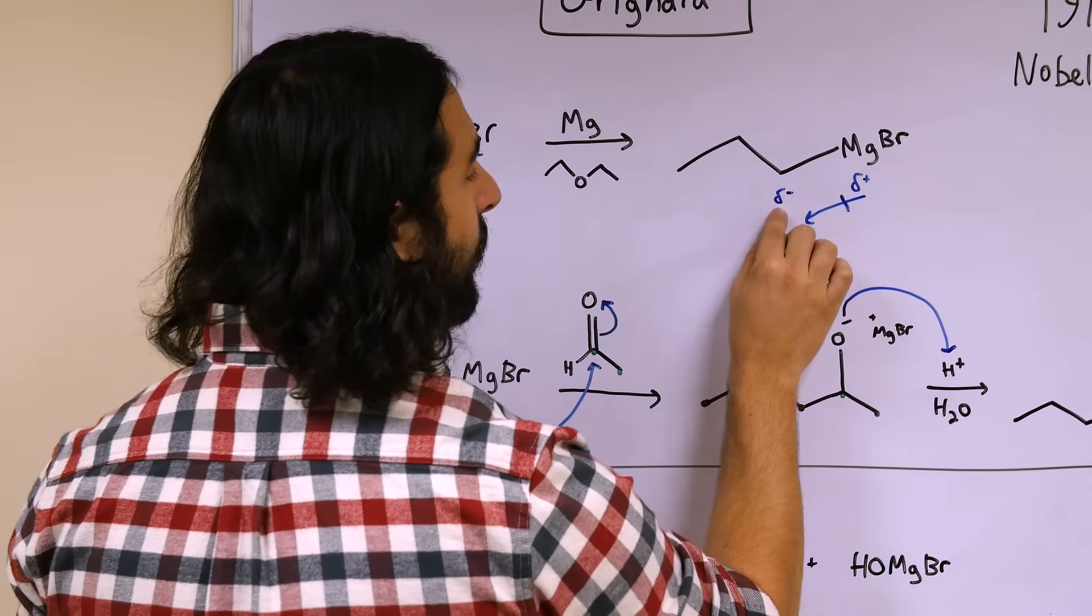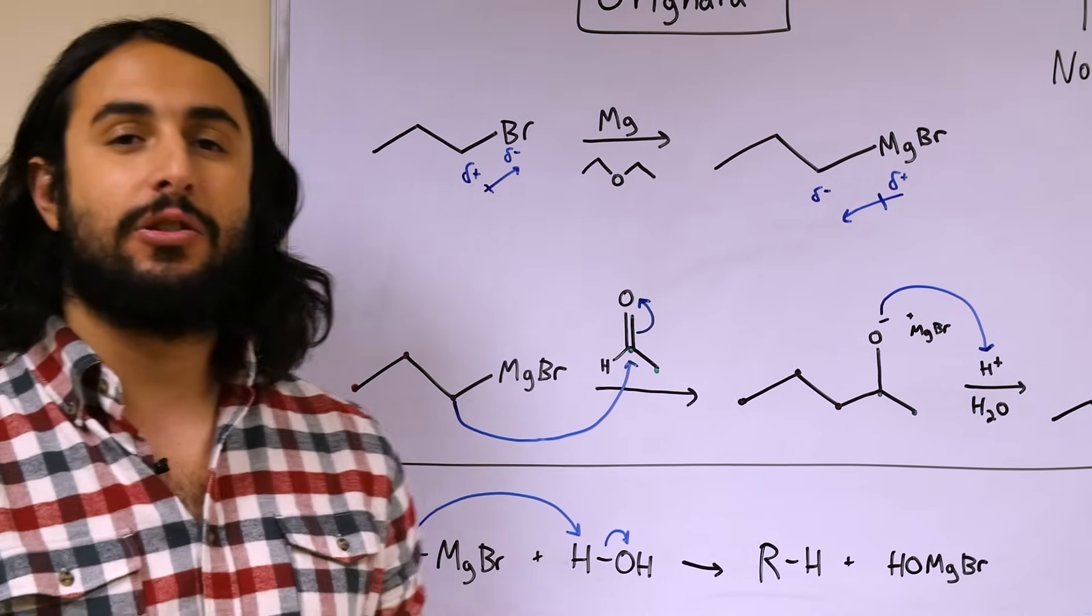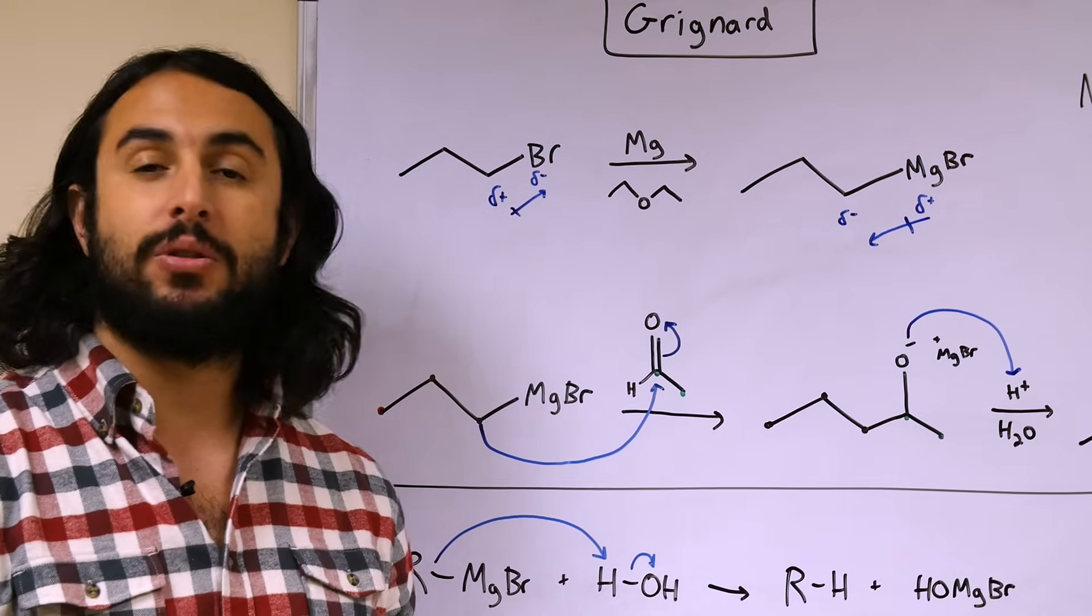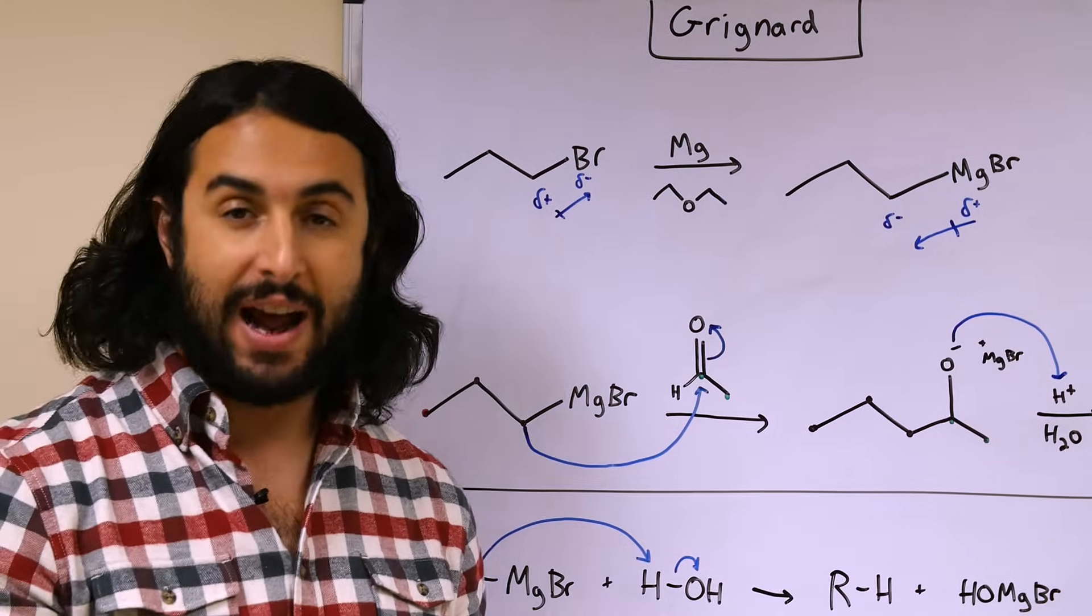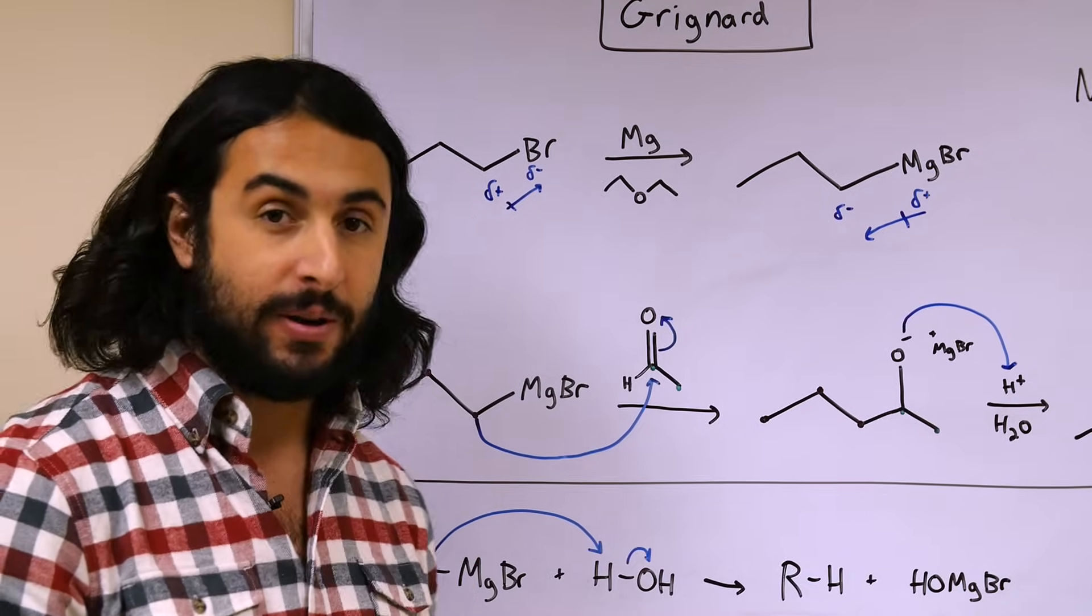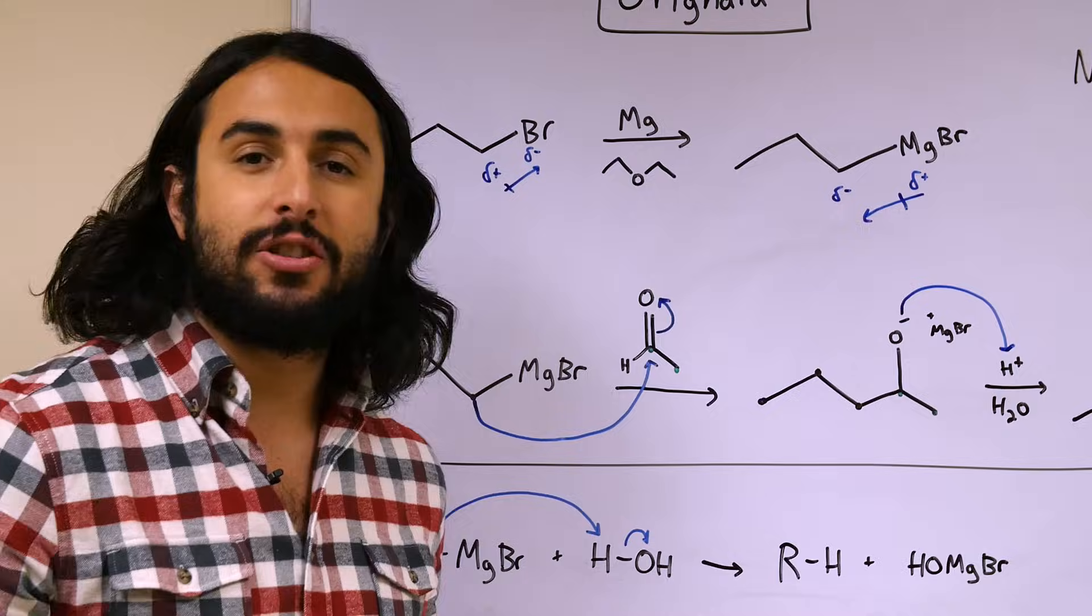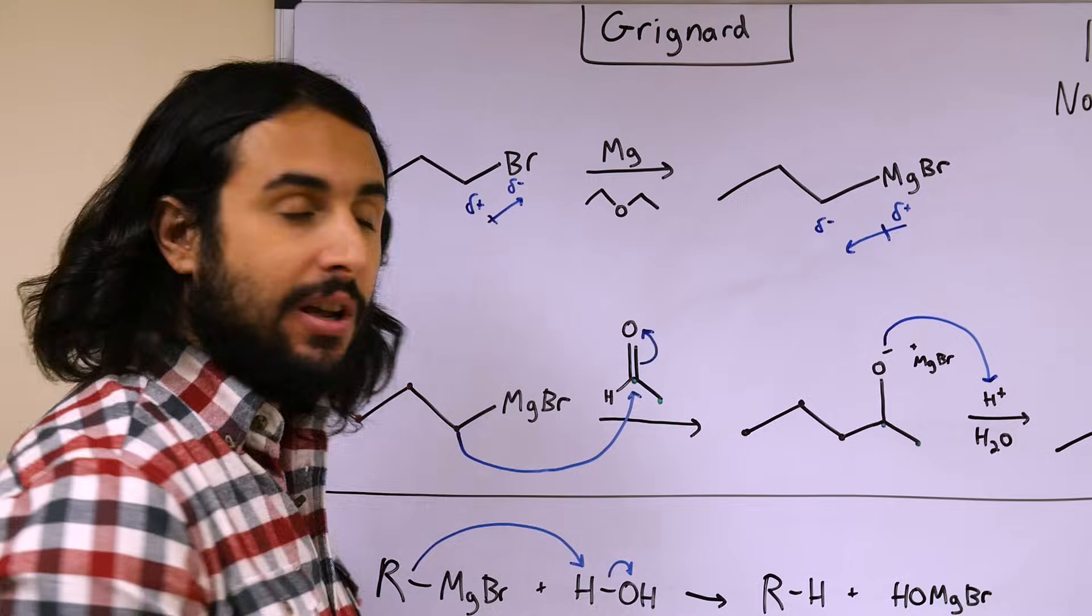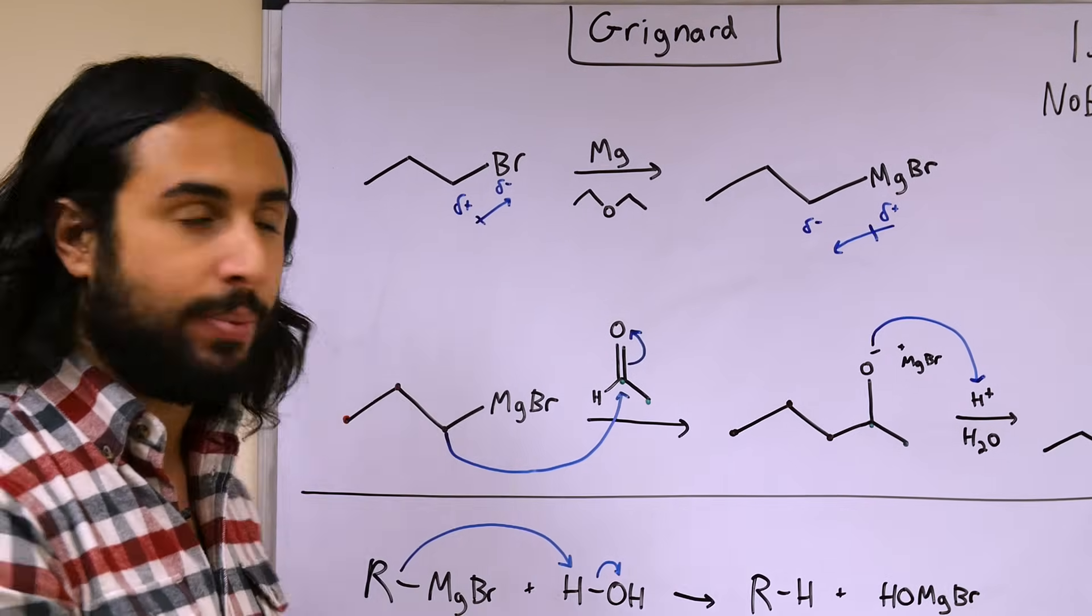So now all of a sudden carbon is the one with the partial negative charge and the magnesium is the partial positive charge. So this is a very interesting situation because typically carbon is partially positive in most organic compounds whether it is a carbonyl carbon or it is attached to halogen or something like that. So this is a rare source of nucleophilic carbon. We have a carbon that can behave as a nucleophile because it has some electron excess. So this is called the Grignard reagent. It is an alkyl halide with magnesium inserted into the carbon halogen bond.